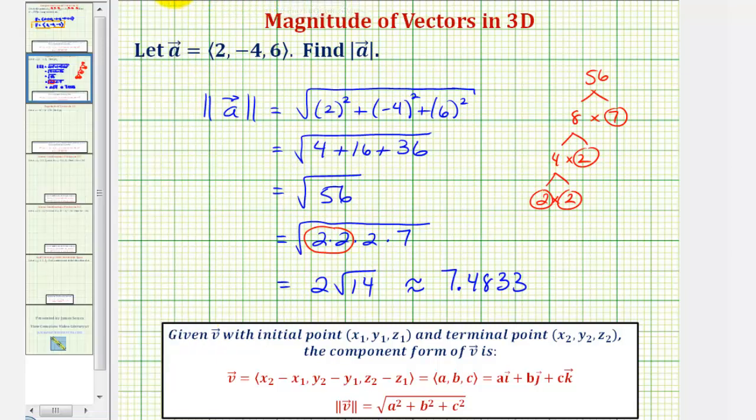Now unless the homework says to round, we should give the exact magnitude, which would be 2√14. I hope you found this helpful.